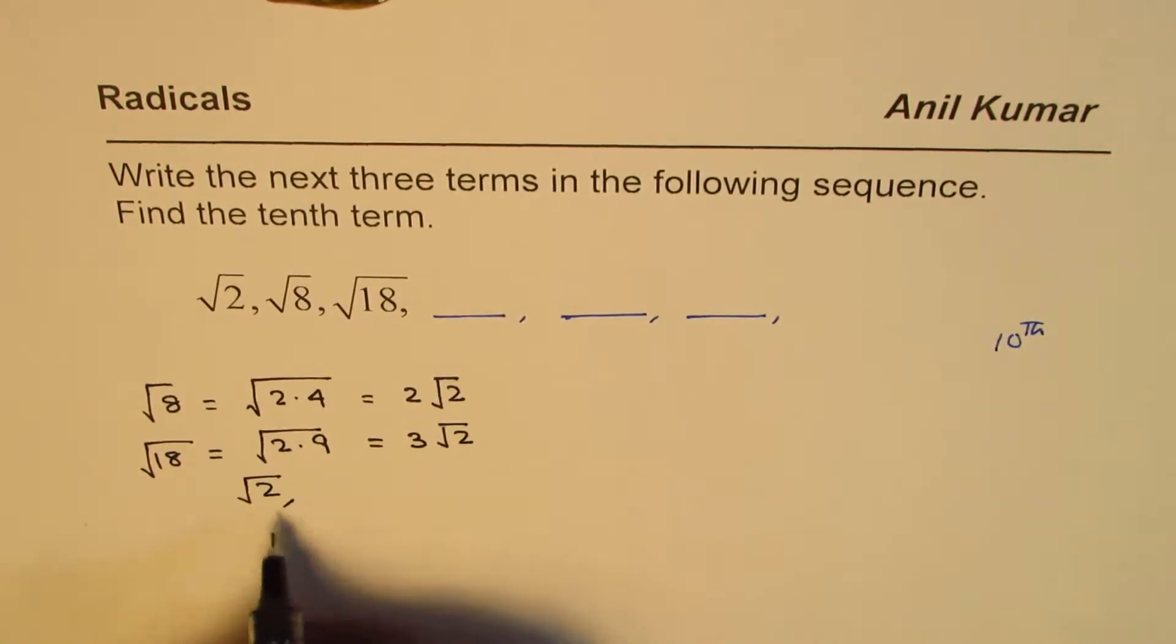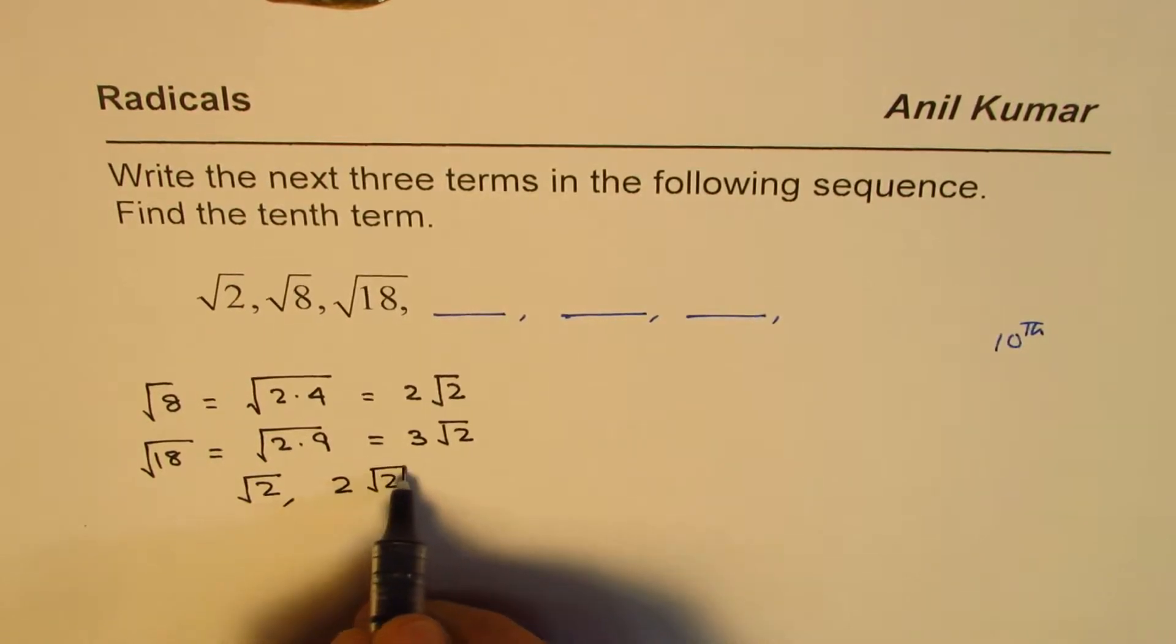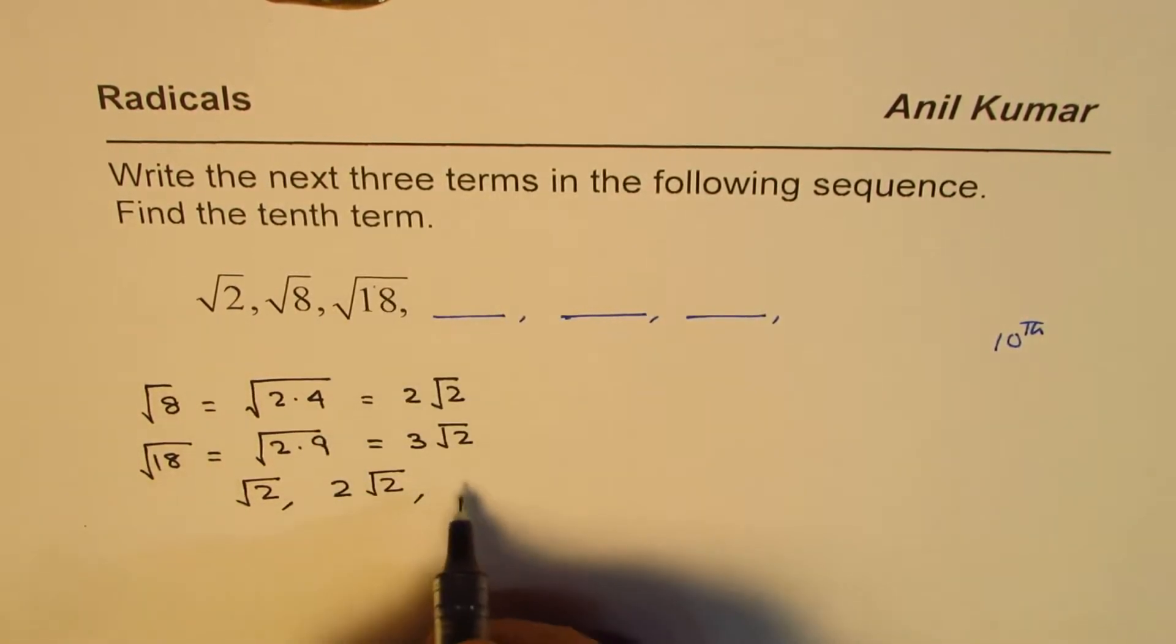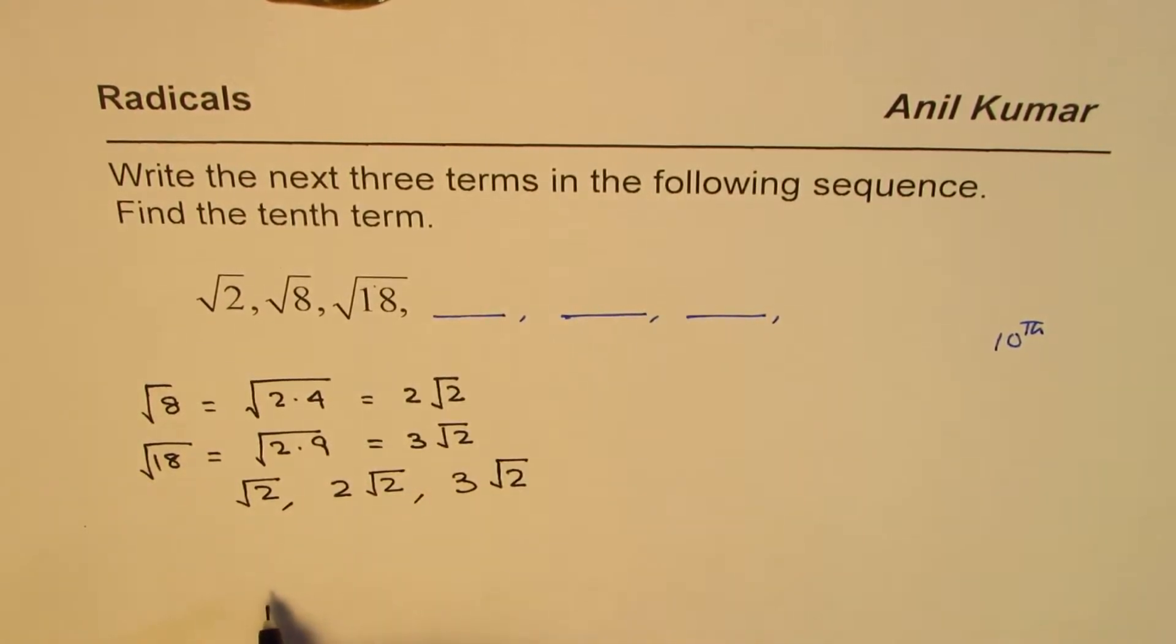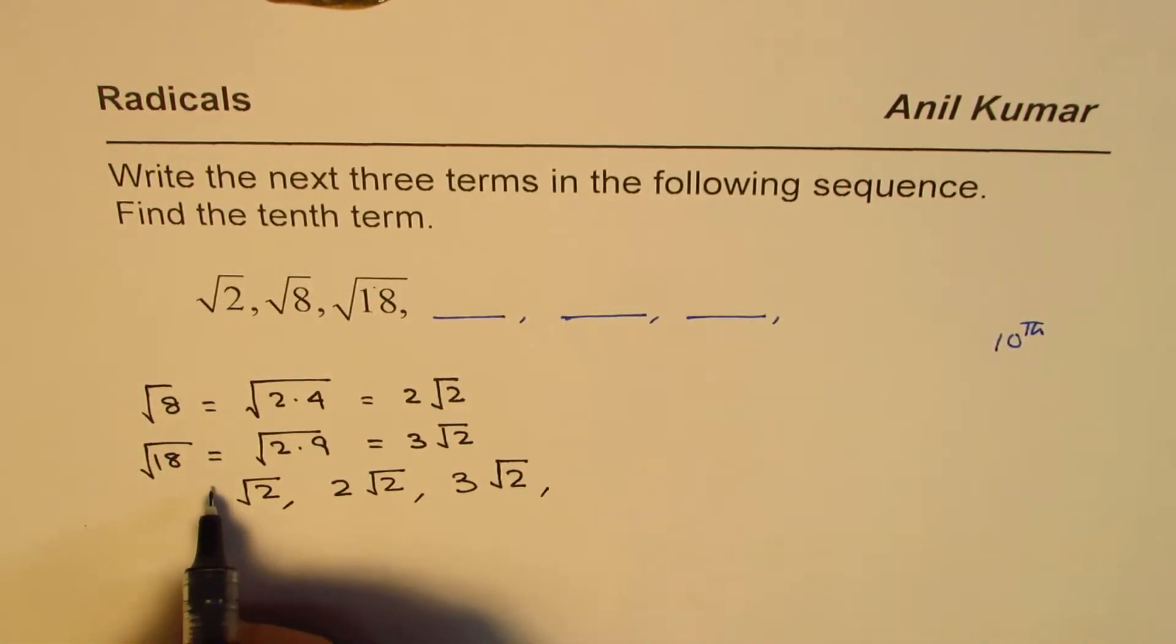Instead of 8 we could write this as 2 square root of 2. Instead of 18 we could write this as 3 square root of 2.